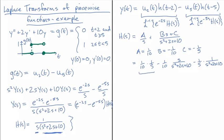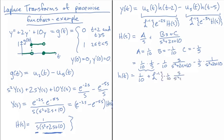So H of s can be written as 1 over 10 times 1 over s, minus 1 over 10 times s over s squared plus 2s plus 10, minus 1 over 5 times 1 over s squared plus 2s plus 10. The first piece is straightforward — its inverse transform is 1 over 10. For the remaining pieces, since we can't factor the quadratic over the reals, we complete the square.